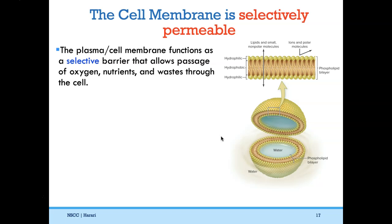The membrane is selectively permeable — I'll use plasma membrane and cell membrane interchangeably. The plasma membrane functions as a selective barrier, allowing passage of oxygen, nutrients, and wastes. Lipids and small nonpolar molecules can easily cross the membrane, such as steroids and small hydrophobic molecules. However, polar molecules and ions cannot get inside by themselves — if you're polar, you cannot get inside the cell without help. This is because they cannot pass through the hydrophobic fatty acid core of the bilayer.